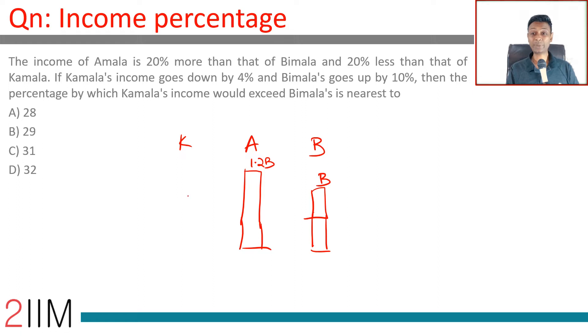And 20% less than that of Kamala. Kamala is K, this is 0.8K. 0.8K equals 1.2B, or 2K is 3B. K is 3 by 2B, 1.5B. So B, 1.2B, 1.5B, wonderful.